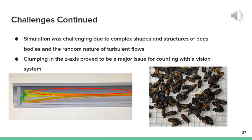Some further challenges that our team faced was difficulty with simulation. Simulation was extremely challenging due to the difficult shapes and structures of bees' bodies and it being very hard to model those. Also, clumping in the z-axis of the vision counting system became a very large issue as you can't see more than one body at the same time.